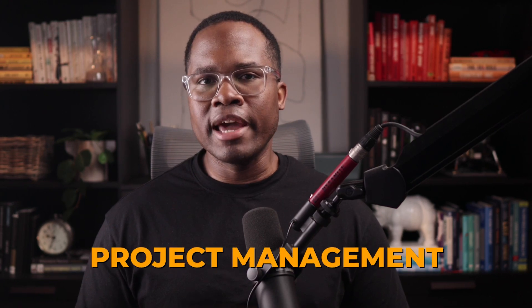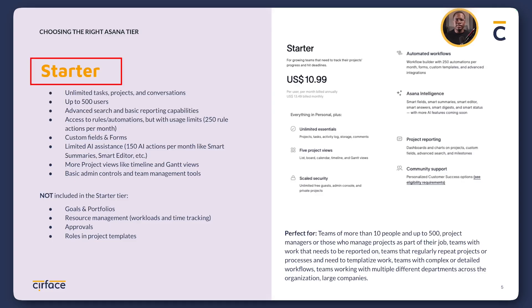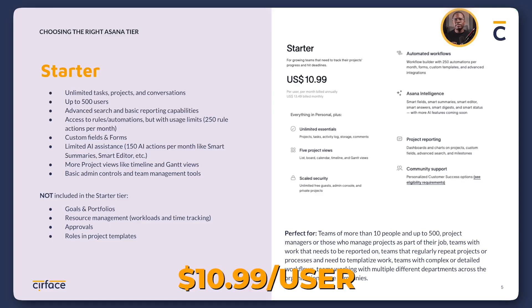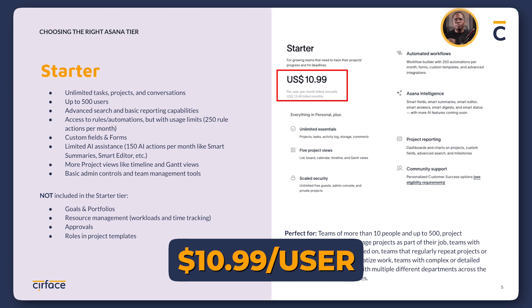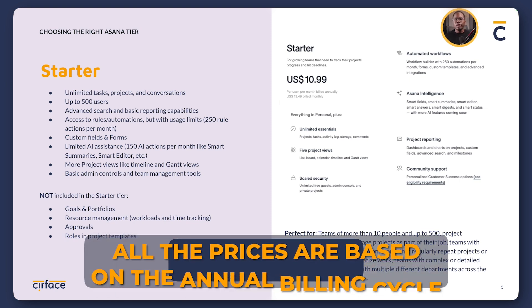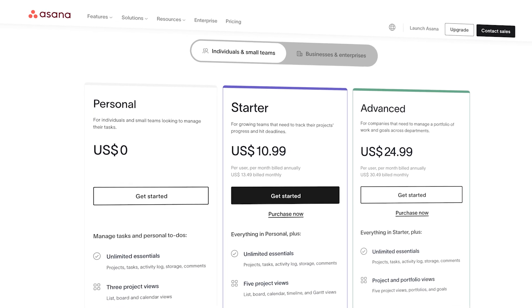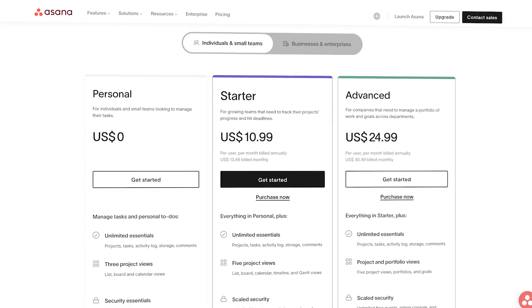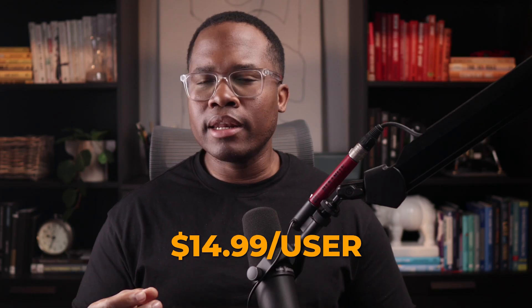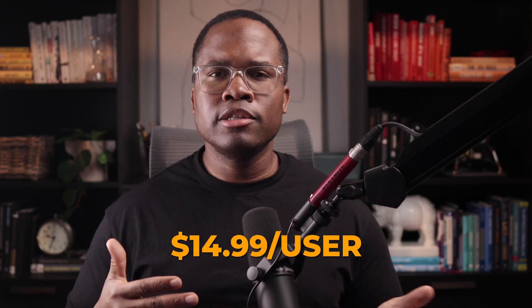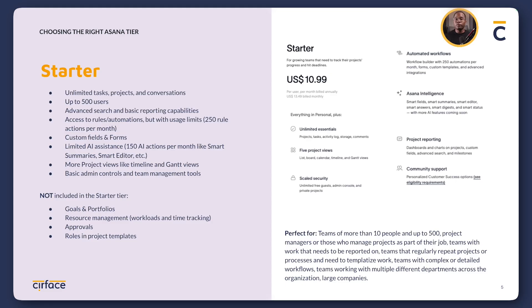The next plan is the Starter plan, which starts at $10.99 per user when billed annually. All pricing today is based on an annual billing cycle. If you want to go monthly, check out the Asana website — the Starter plan is around $14.99 per user monthly. There are savings associated with the annual plan.